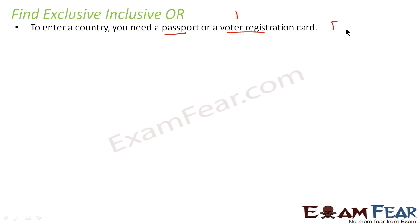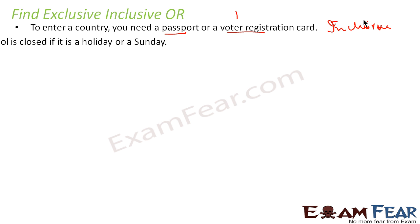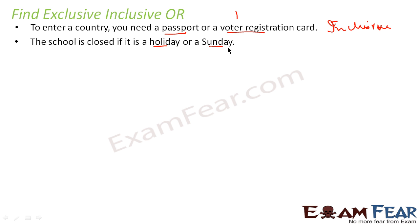The school is closed if it is a holiday or Sunday. If it is a holiday, for example Independence Day, it is closed. If it is Sunday, it is also closed. And there can also be a day where a holiday falls on a Sunday — for example, Independence Day on a Sunday — and school is still closed. So school is closed on holiday, Sunday, or both. This is also inclusive.